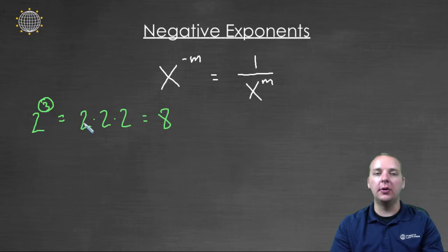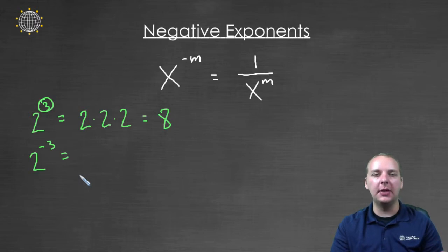So two to the third is eight of course. But what happens if you have something like two to the negative three power? You can't really multiply something by itself negative three times, that doesn't make sense.